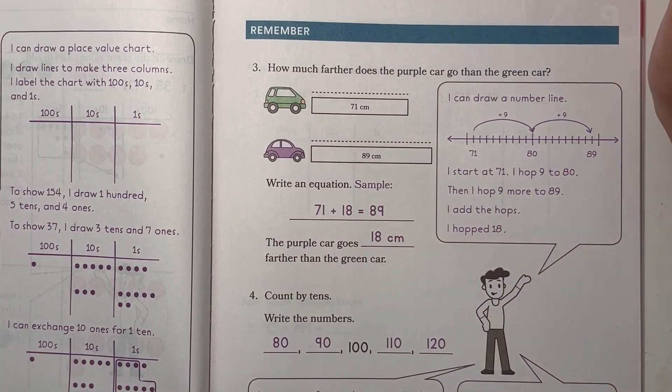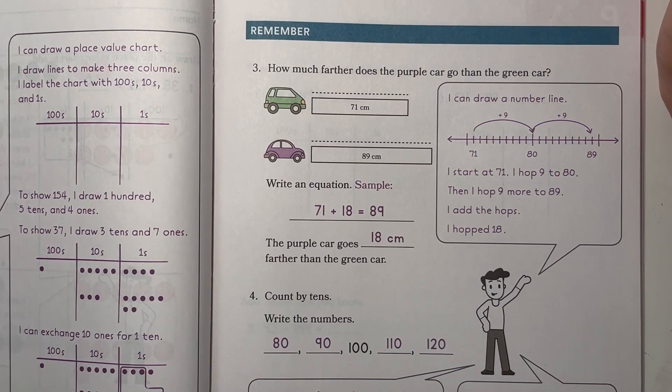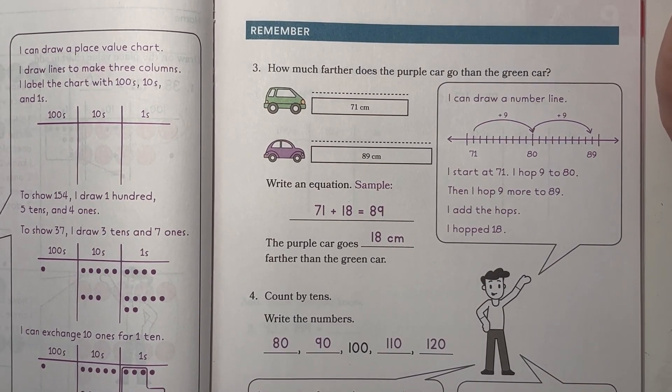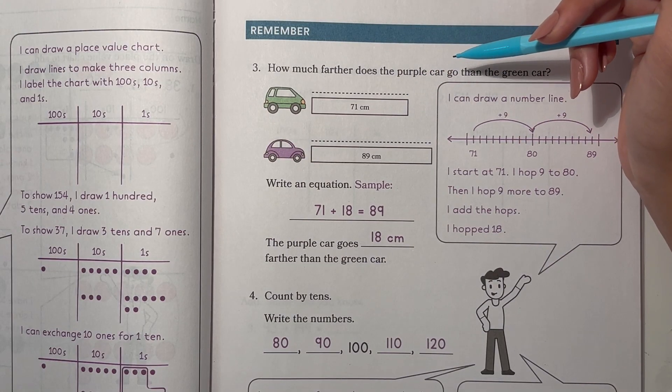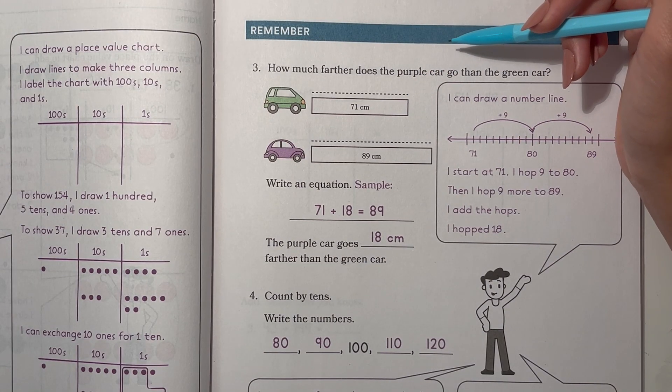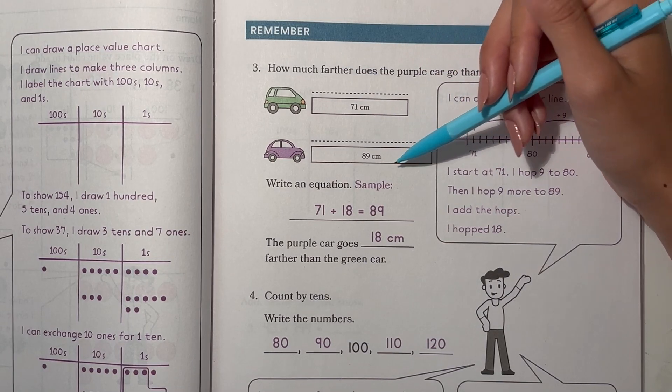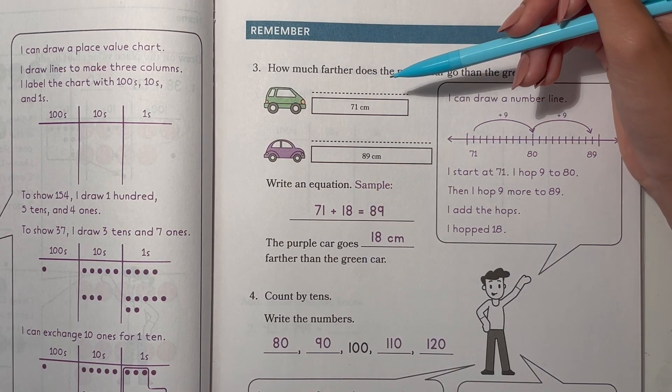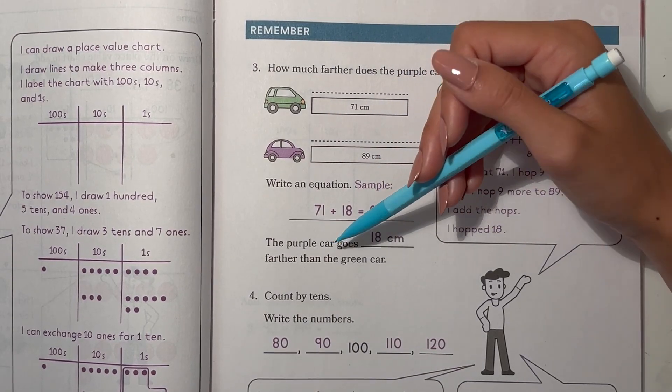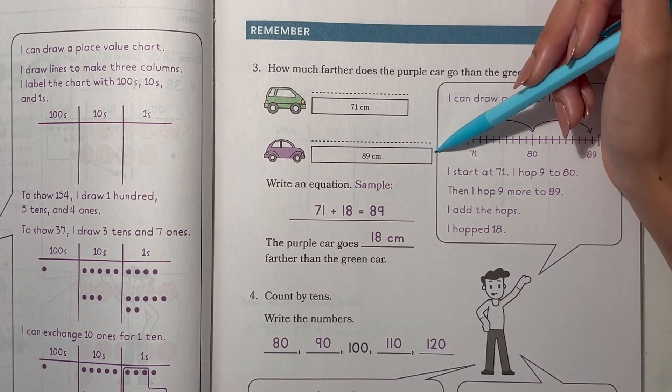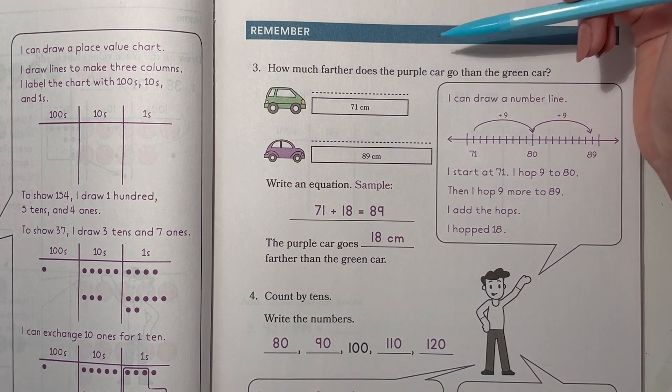Next, number 3. How much farther does the purple card go than the green card? The green card goes 71 centimeters. The purple card goes 89 centimeters. So 71 plus 18 equals 89. So that means the purple card goes 18 centimeters farther than the green card.